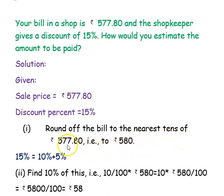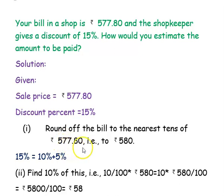Looking at the tens place, the digit is 7 and the next digit is 7, which is greater than 5, so we add 1. Thus 77 becomes 80, and the rounded sale price becomes rupees 580. So that is the first step — we have rounded to the nearest tens and the sale price is now rupees 580.